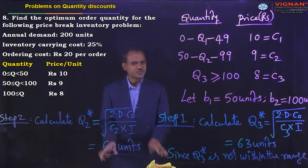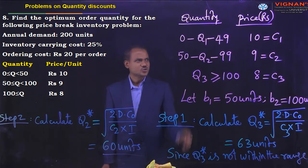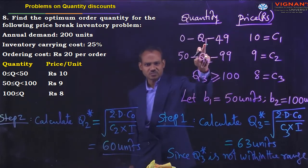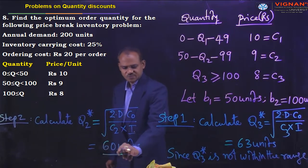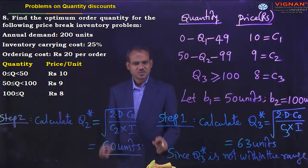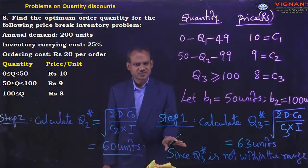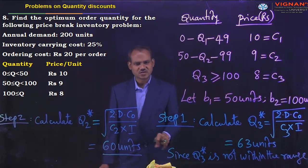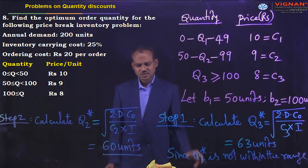Since the obtained value is satisfied within the range, there is no need to go to step 3 or calculate Q1 star. If the quantity lies within the range, stop the problem at this step. For this problem, stop here at 60 units.